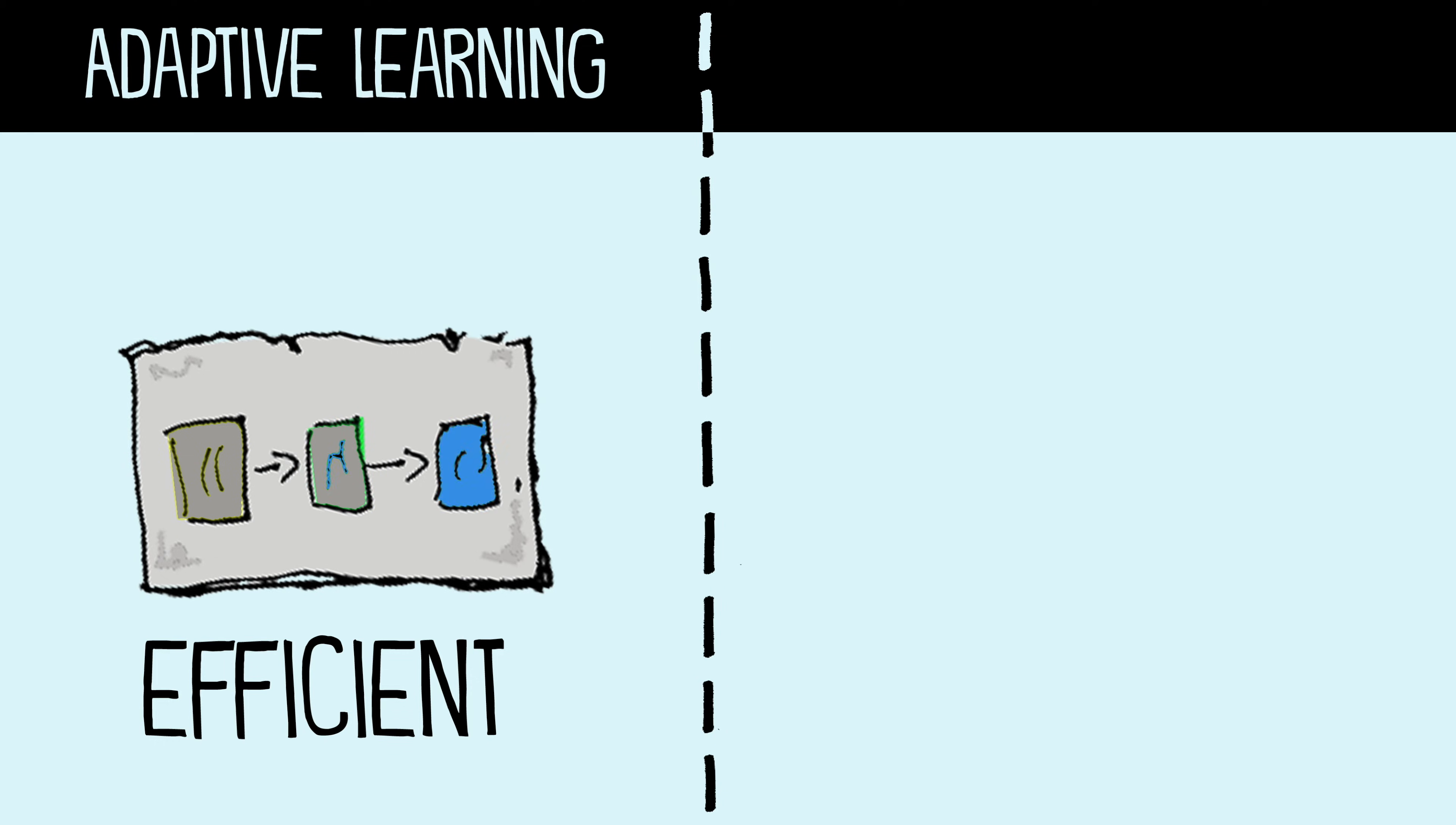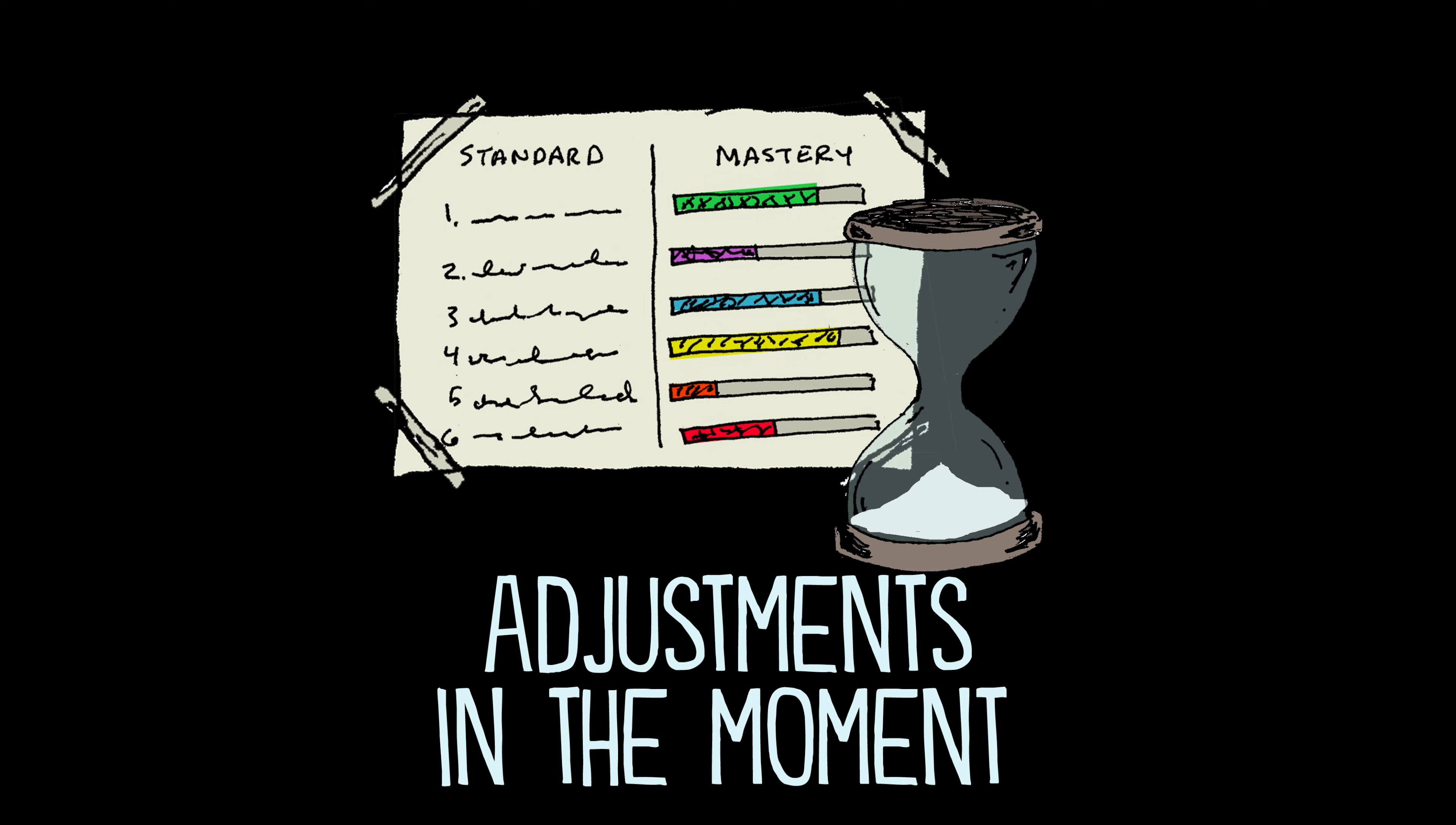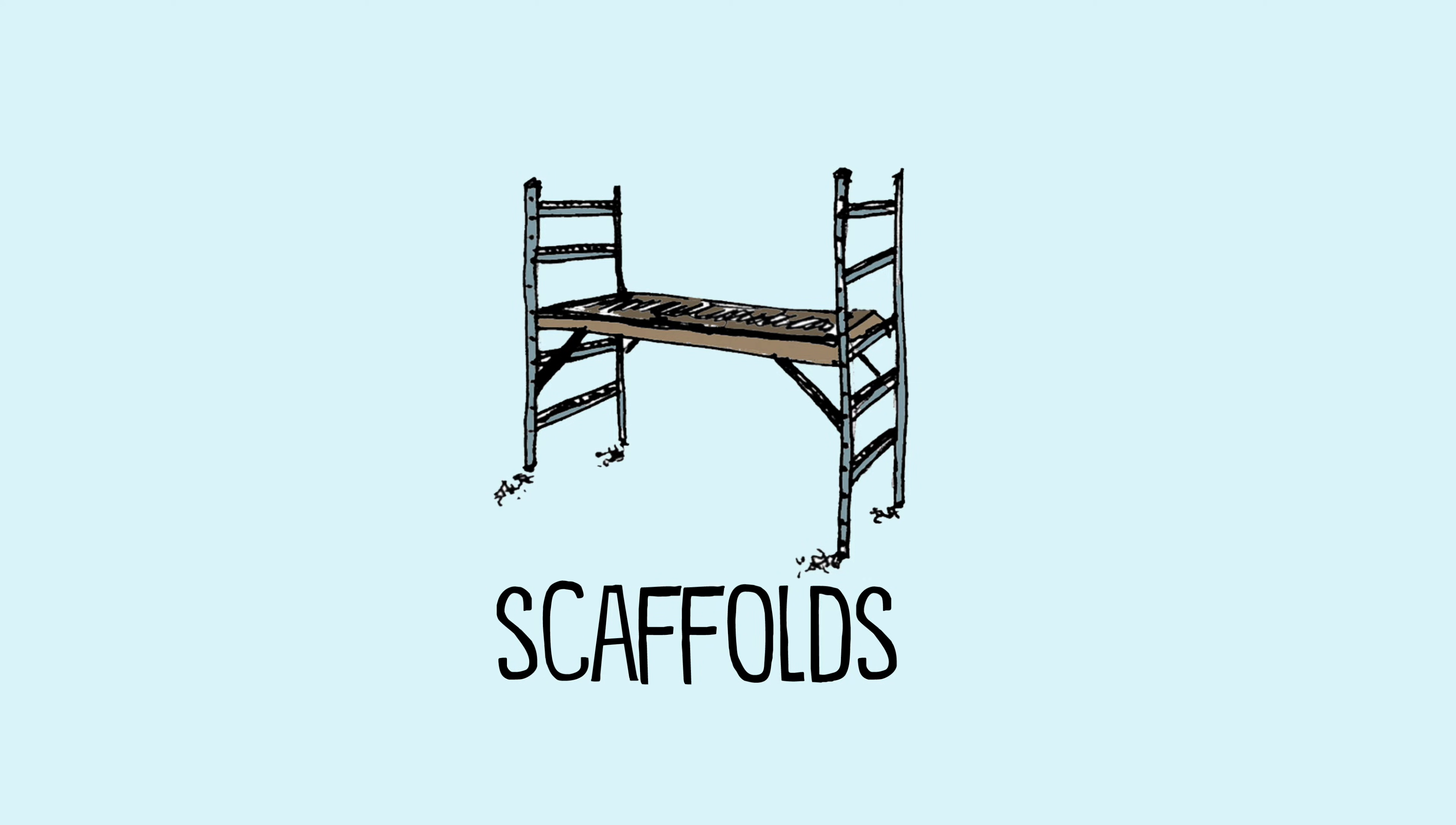Adaptive learning is efficient with specific adjustments happening in the moment. Meanwhile, personalized learning is often messy. Even with structures and scaffolds, it tends to be a little less predictable.